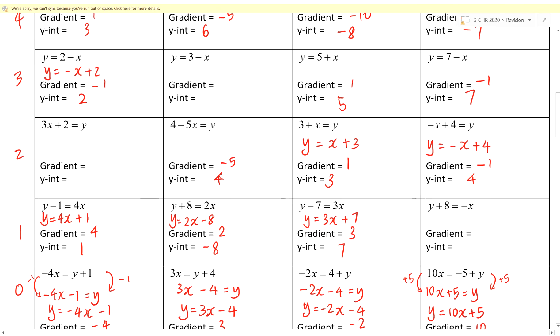Block 0 level 2 — gradient is 3, intercept is 2. So this is rewritten as y equals 3x plus 2. Good.